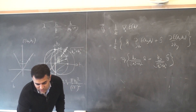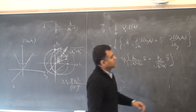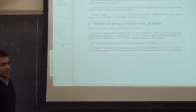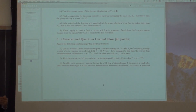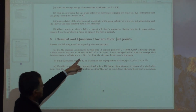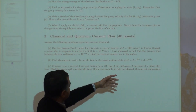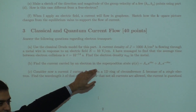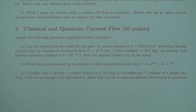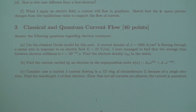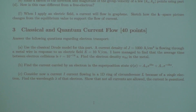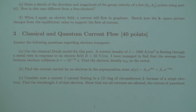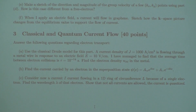The last question: the first part is a Drude model plug-and-play problem — given scattering rate, current, and electric field, you use Ohm's law to find the carrier density n using conductivity. The number you get is kind of low for a metal, but there are metals with low carrier density, so that's okay.